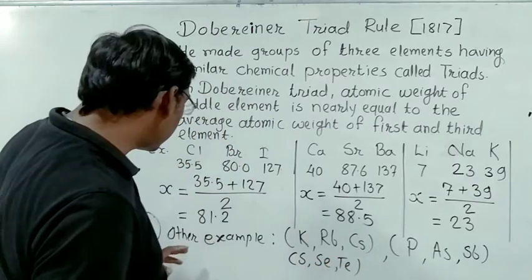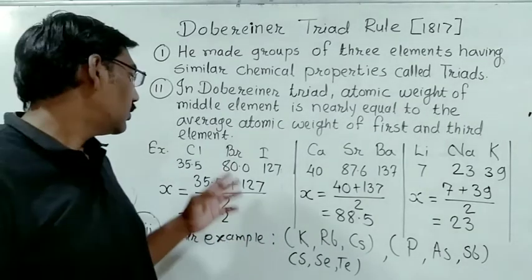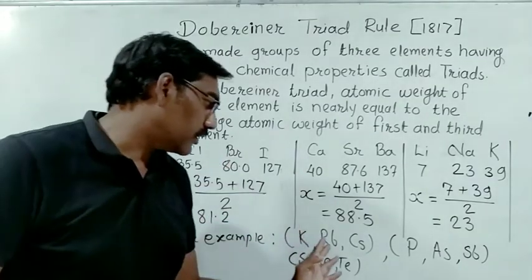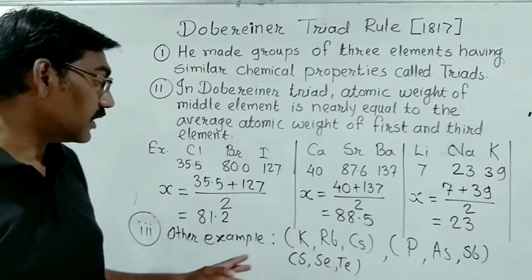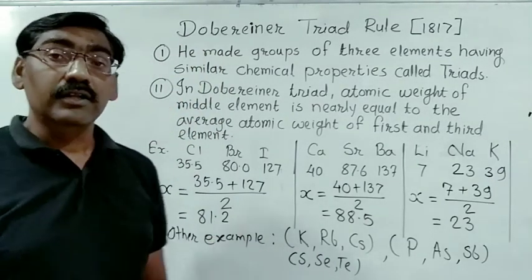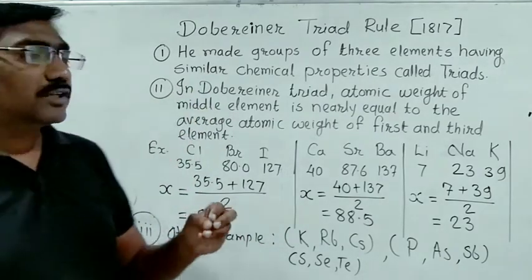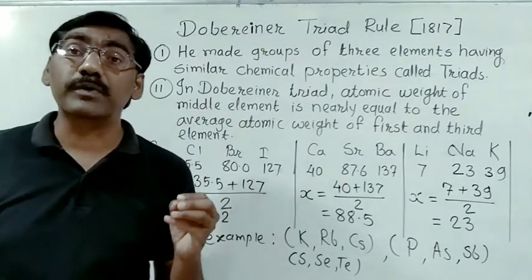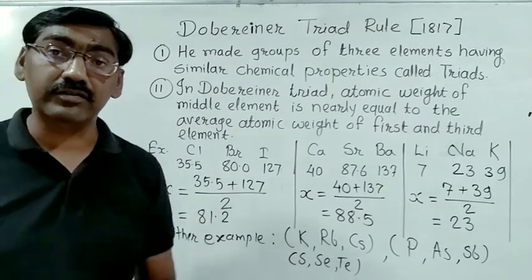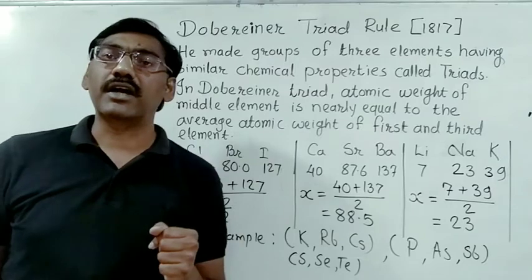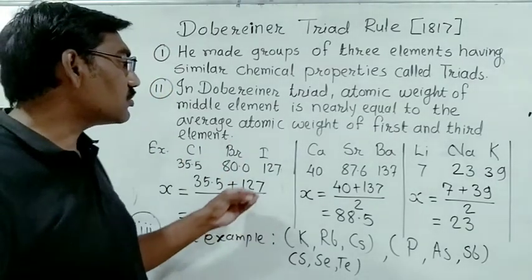So these are some examples of triads given by Dobereiner — Cl/Br/I, Ca/Sr/Ba, and Li/Na/K — another three examples of triads. This concept by Dobereiner grouped elements to simplify the study of elements. But again, there are some drawbacks and limitations to this rule.